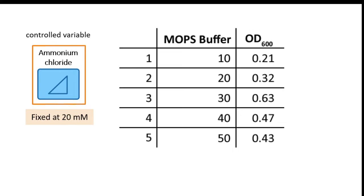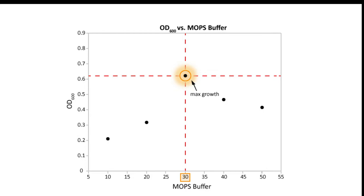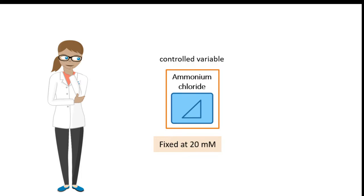Once the experiments are performed, the following graph is obtained. Anna concludes that the optimal concentration to maximize growth is 30 millimolars.